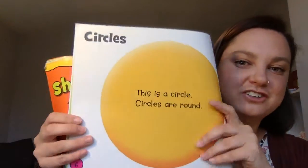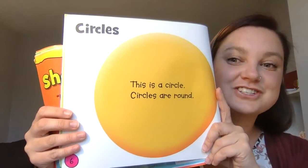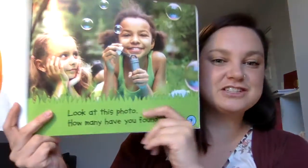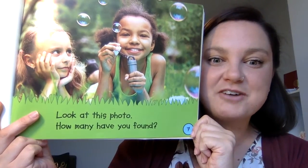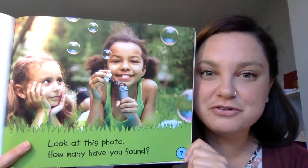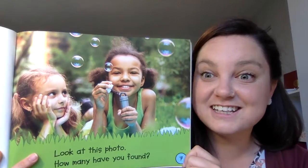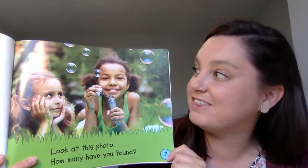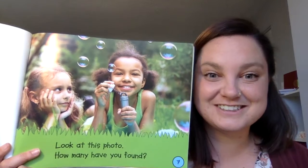A circle. This is a circle — circles are round. Look at this photo. How many have you found? I see lots of circles. They look like bubbles floating by these girls.